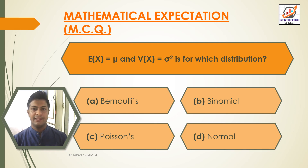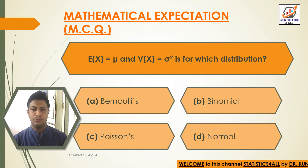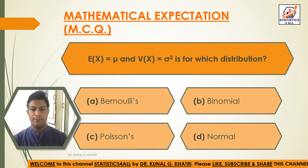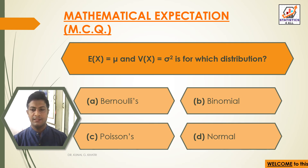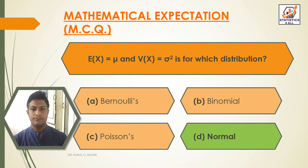E(x) equal to mu and V(x) equal to sigma square is for which distribution? Option A — Bernoulli's; Option B — Binomial; Option C — Poisson; Option D — Normal. The answer is Option D: Normal. E(x) equal to mu (the mean) and variance equal to sigma square is the normal distribution.